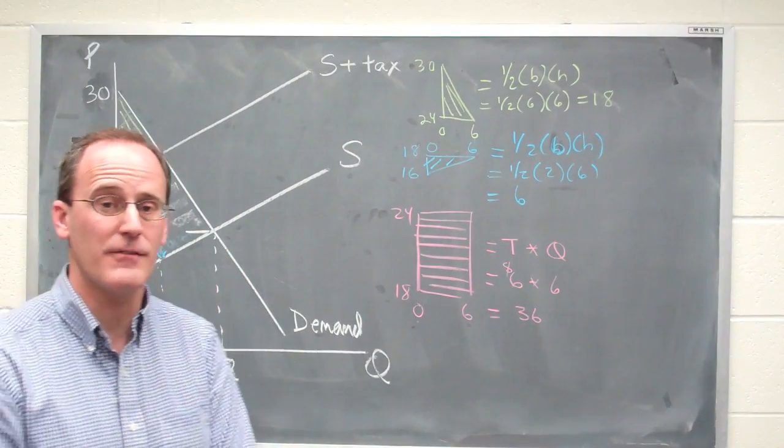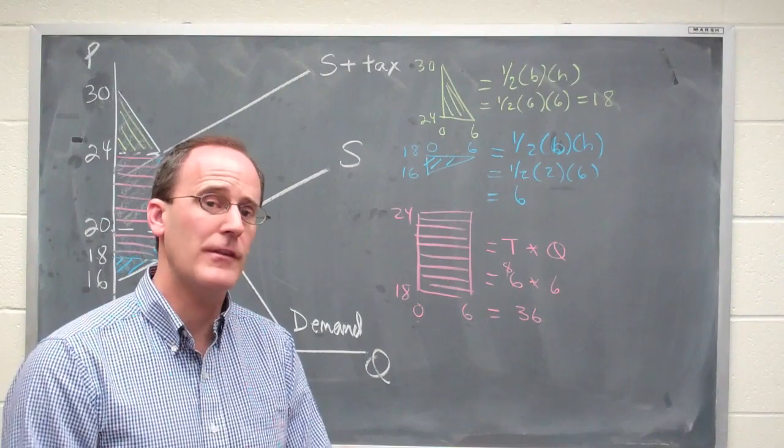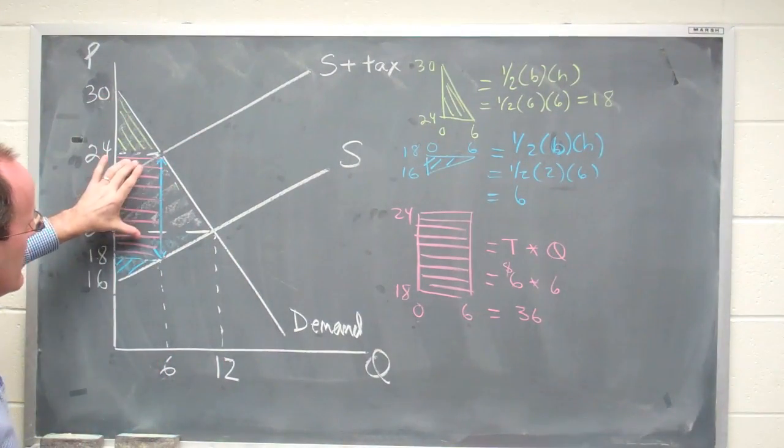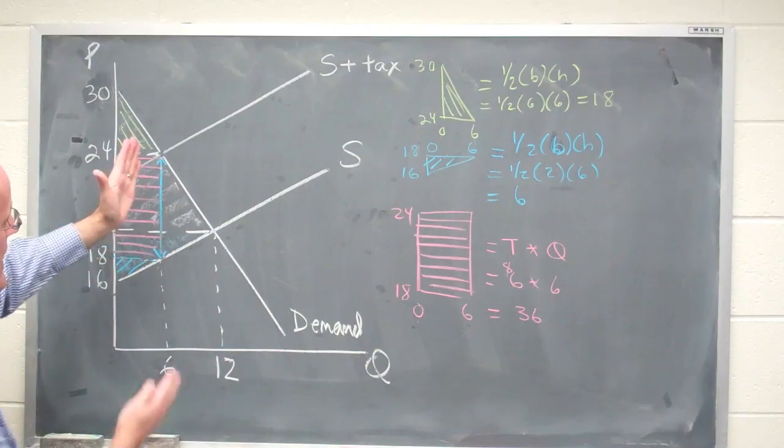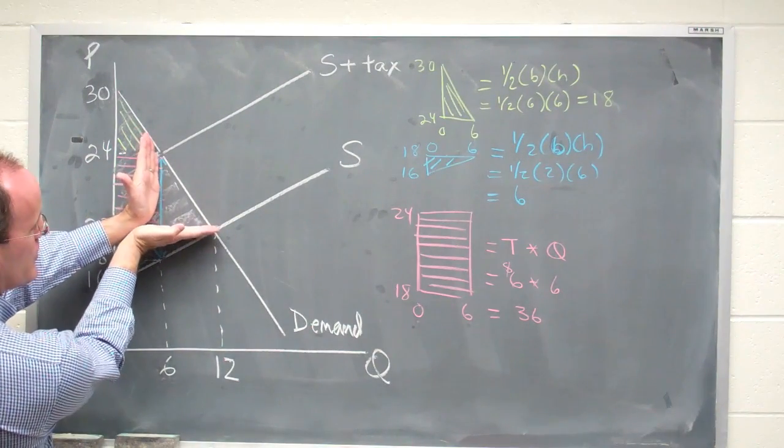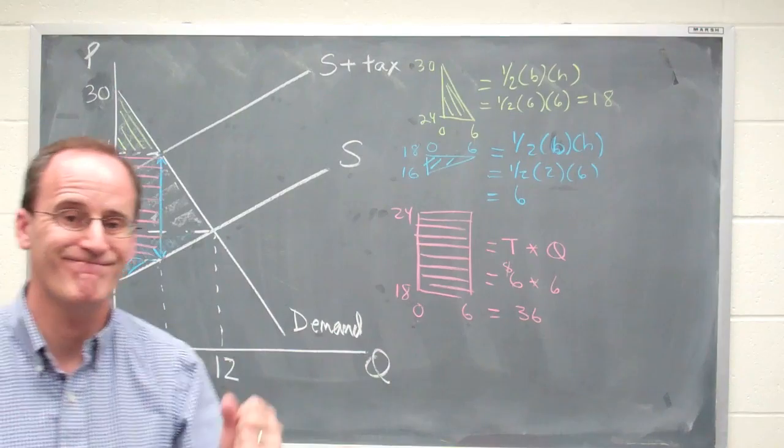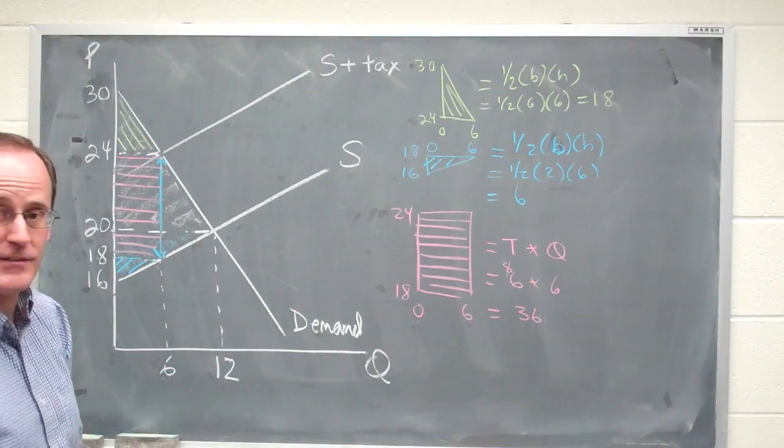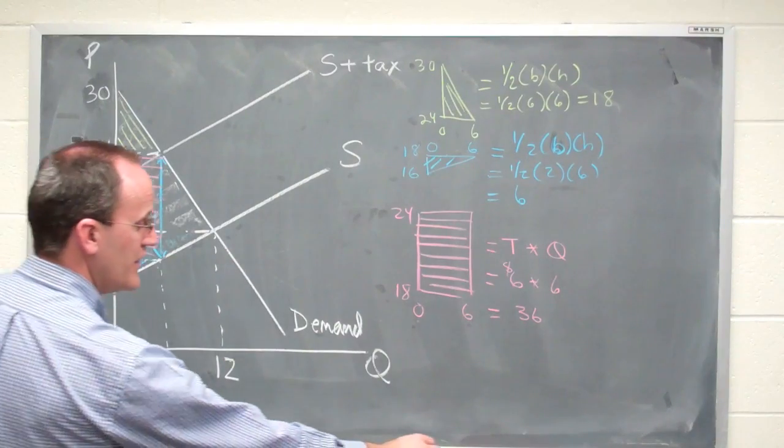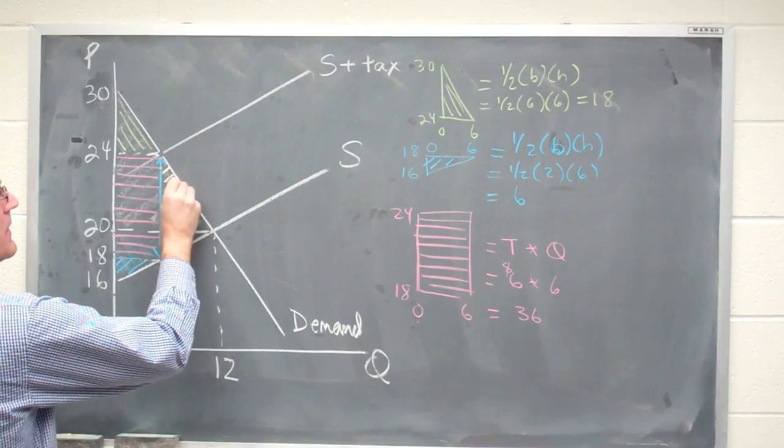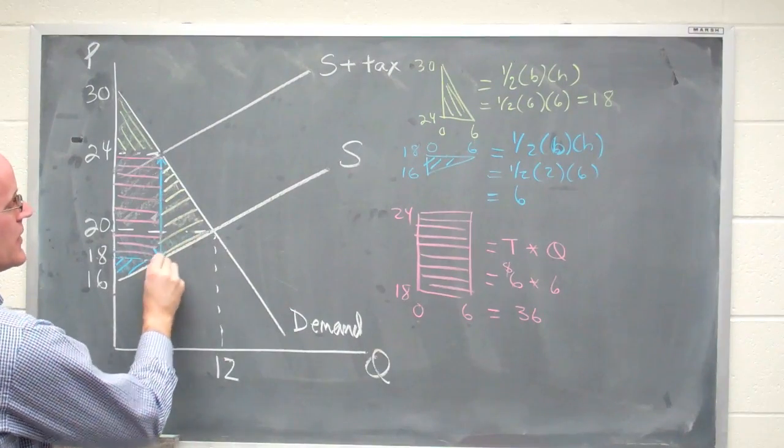Now it seems like we've done a lot of work to try to figure out what's happening here, but there are a couple other things that are going on that are really important. Because I've accounted for the green and the pink and the blue area, but I haven't said anything about this area right here, which used to be a part of consumer surplus and producer surplus. That's gone. It just vanishes. Twelve units were sold before. Now only six are sold.